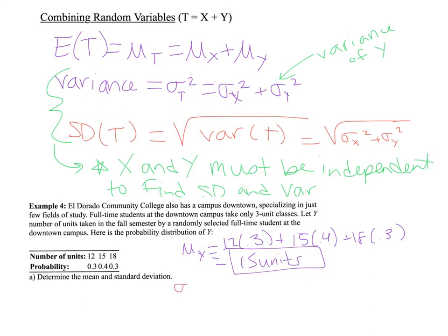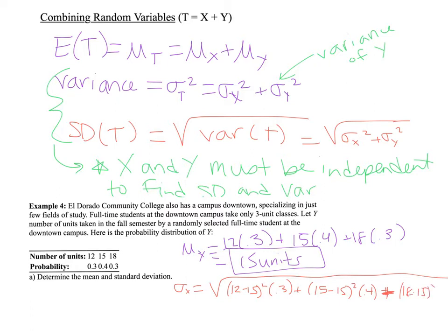The standard deviation uses the same formula as before. We compute 12 minus the mean, square that value, multiply by 0.3. The next part is nice because 15 minus 15 equals 0, so that term goes away. Then we add 18 minus 15 squared times 0.3. The final answer ends up being 2.3 units for the standard deviation. I recommend you work this out on your calculator to get practice.